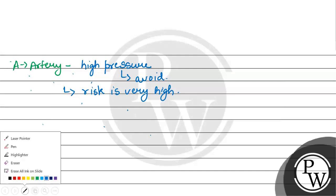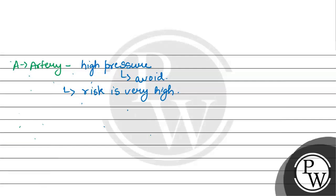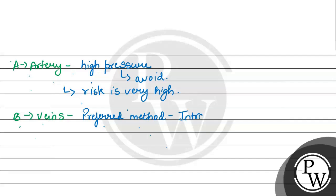Option B is veins. Veins are our blood vessels, and the major characteristic they have is low pressure. Because of this, veins are the preferred method — what we generally call intravenous injections. Intravenous injections deliver medicine very fast and they absorb quickly.